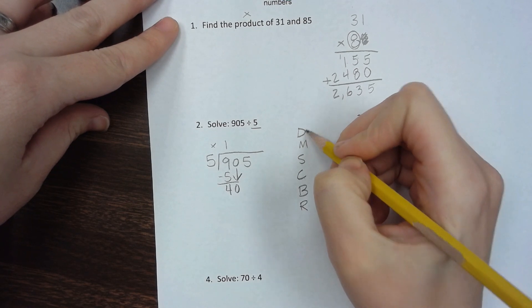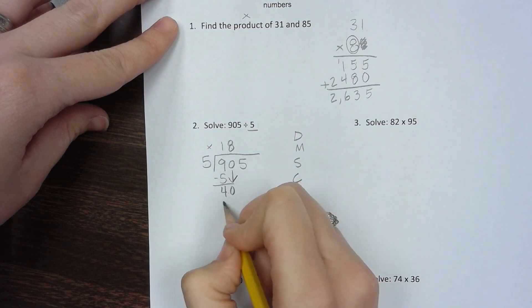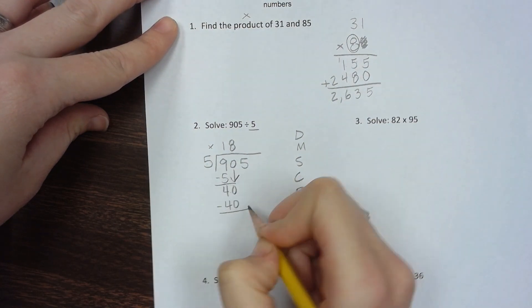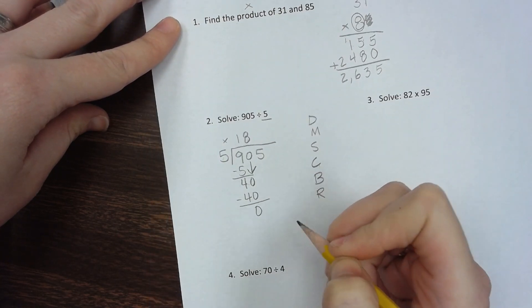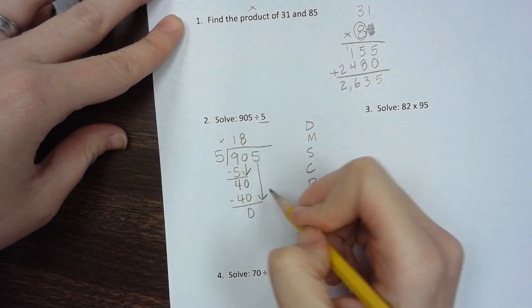Now divide 40 by 5, which is 8. Multiply: 8 times 5 is 40. Subtract: 40 minus 40 is 0. That's smaller than 5, so bring down the last number.